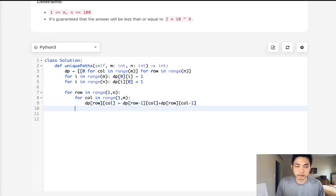And finally, we can just return our bottom right one, and that's going to be N minus one, M minus one.